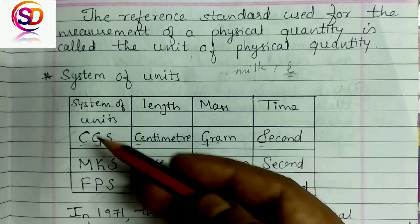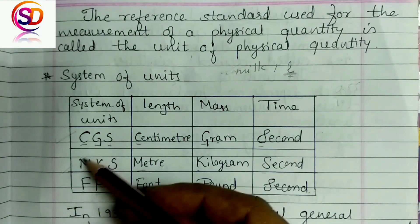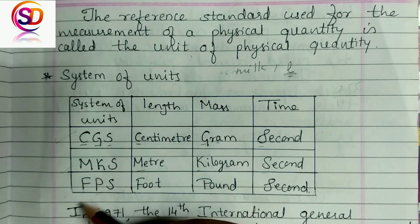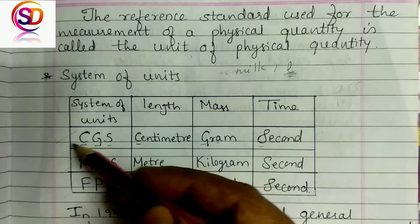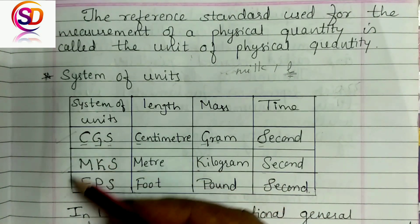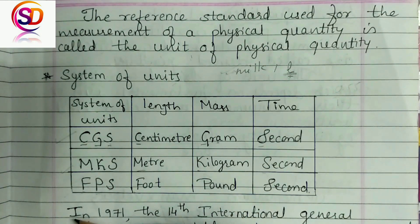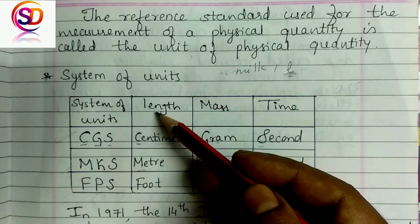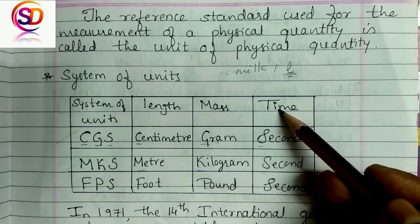There are various systems of units, namely CGS, MKS, and FPS, and one more is the SI system which is very familiar to you. We first study these three basic systems of units, then proceed to the SI system. These systems mainly measure length, mass, and time.